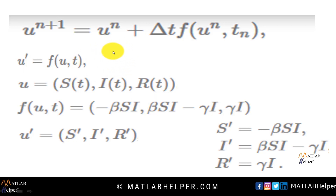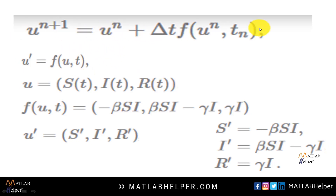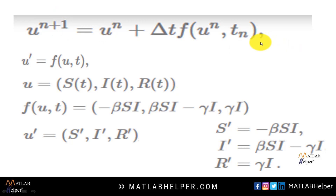Thus, the general short notation u' = f(u, t) is very handy and we can derive the numerical methods. Coming to the equation: u(n+1) = u(n) + delta_t * f(u(n), t(n)). This equation is derived from u' = f(t), where u' is the difference of unknowns at the (n+1)th day minus unknowns at the nth day. Since the unknowns at the nth day have already been predicted, by using this equation we can predict the cases for the (n+1)th day, where delta_t is known and f(u, t) is already known.